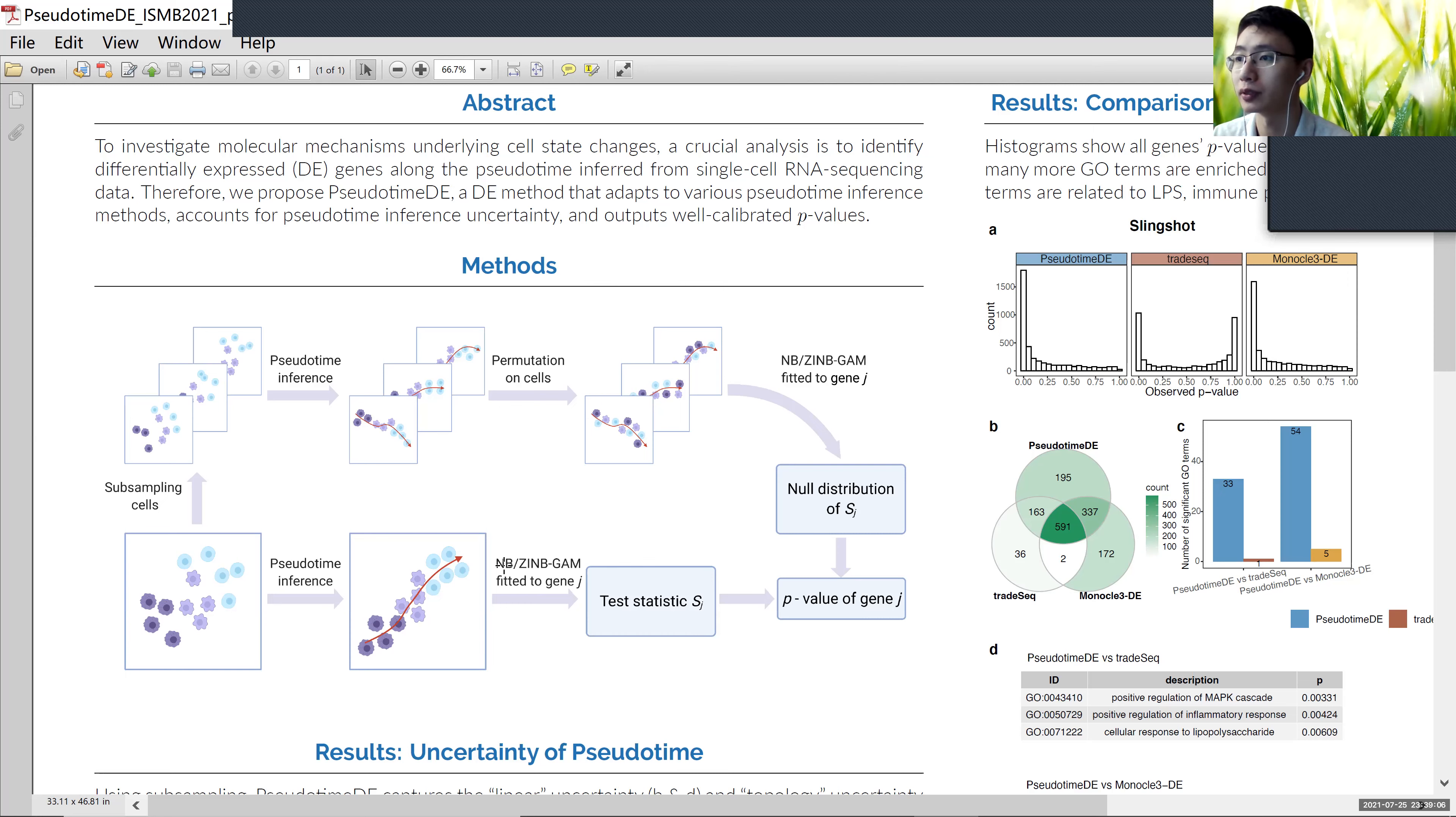After that, we perform negative binomial or zero-inflated negative binomial generalized additive model to fit the gene curves along pseudotime, and we calculate the test statistics for each gene.